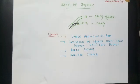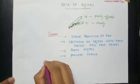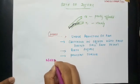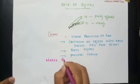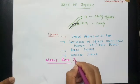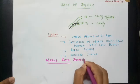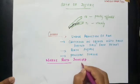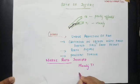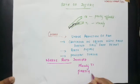The nerve roots involved are mainly T1 and partly C8.